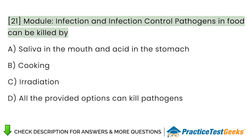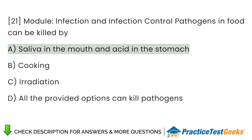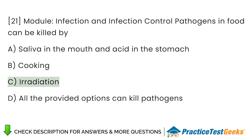Module: Infection and Infection Control. Pathogens in food can be killed by: A. Saliva in the mouth and acid in the stomach. B. Cooking. C. Irradiation. D. All the provided options can kill pathogens.